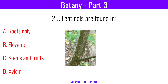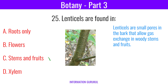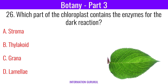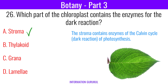Lenticels are found in? Stems and fruits. Lenticels are small pores in the bark that allow gas exchange in woody stems and fruits. Which part of the chloroplast contains the enzymes for the dark reaction? Stroma. The stroma contains enzymes of the Calvin cycle of photosynthesis.